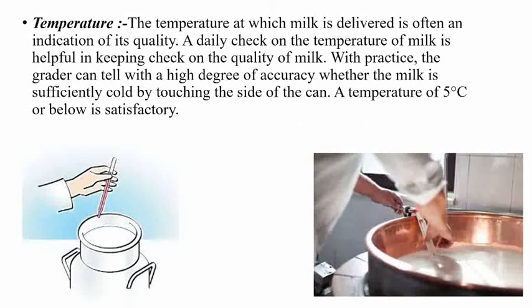Temperature plays a key role in the acidity of milk and its pH. The temperature at which milk arrives is often an indication of its quality. A daily check on the temperature is helpful for keeping a check on milk quality. We should keep the milk at 5 degrees centigrade, so that bacterial growth is very slow and the milk quality is maintained.